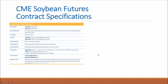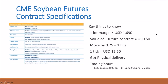Moving to CME futures contract specs. To trade one lot of CME soybean futures you need around $1,700 in margin. One full contract value is $50 per tick. It moves by 0.25 increments, so one tick movement equals $12.50 USD. Physical delivery is an important feature. Trading hours are from 8 a.m. to 8:45 a.m., then after a break it reopens at 9:30 a.m. to 2:20 a.m. Malaysian time.